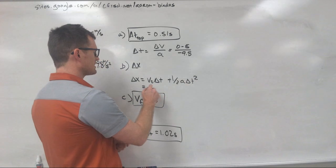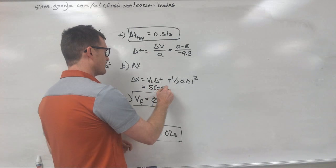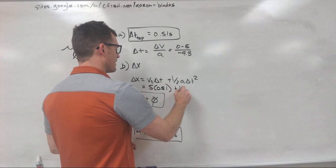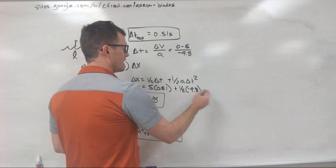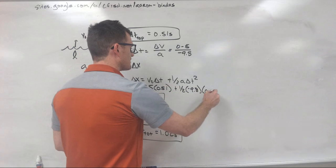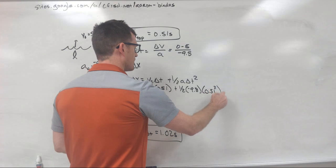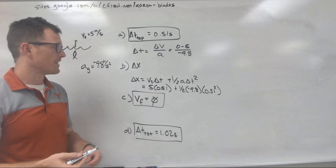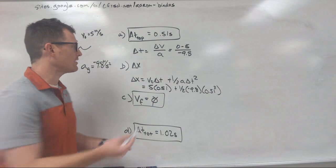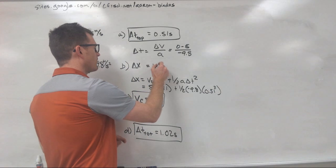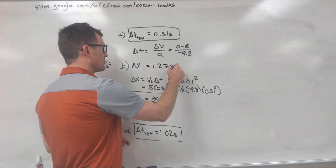Our initial velocity was 5 times 0.51 plus one-half negative 9.8, that's our acceleration, times 0.51 squared. If we plug all of this into our calculator, what we end up with is 1.27 meters.